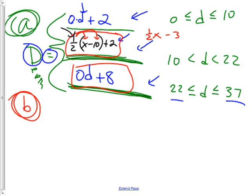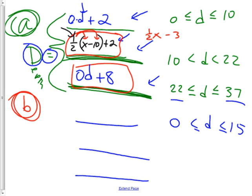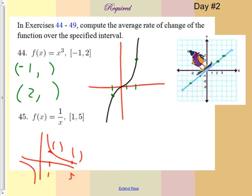The harder part is going to be part B — doing it from the other end of the pool. The cool thing is things are just backwards; it's the same exact process. You'll have three equations: from the deep end the first 15 feet are all the same, so between zero and 15, then between 15 and 27, and so on. The only hard one is the middle equation — that's your homework for today.